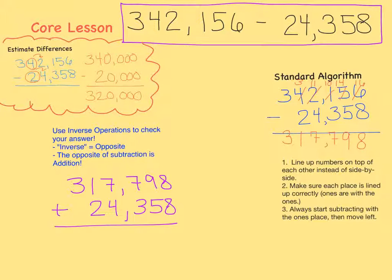When we add them together, we get 342,156. Wow! That's the same as our original number. That means we subtracted correctly.